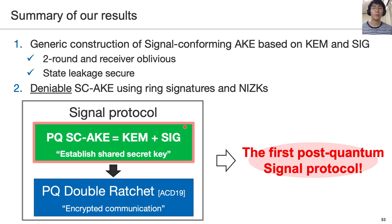It satisfies the required properties — receiver obliviousness and state leakage security — and it can be instantiated from well-established post-quantum assumptions. We also propose a deniable SC-AKE protocol using ring signatures and a NI-ZK argument. In this work, we focus on the initial key exchange protocol of the Signal protocol and propose a post-quantum version. Combining it with the post-quantum double ratchet protocol proposed by Alven et al., we obtain the first post-quantum Signal protocol.